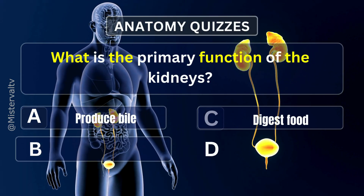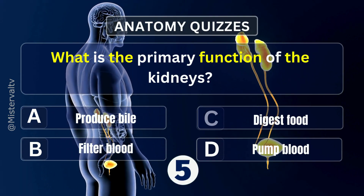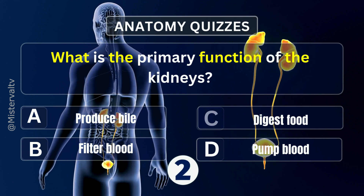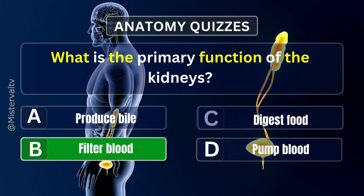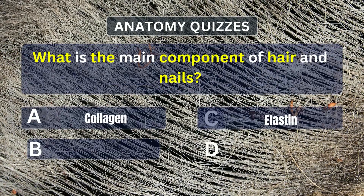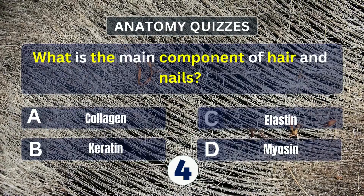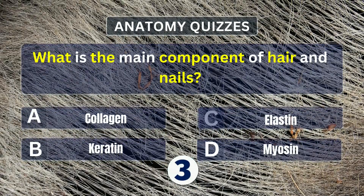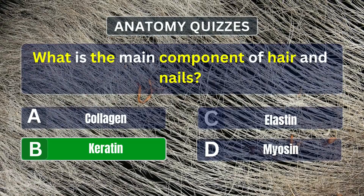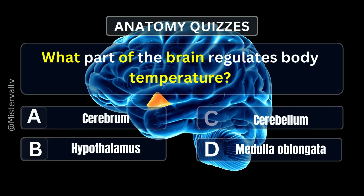What is the primary function of the kidneys? Answer. B. Filter blood. What is the main component of hair and nails? Answer. B. Keratin.